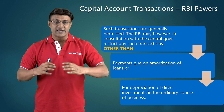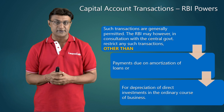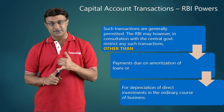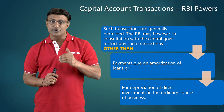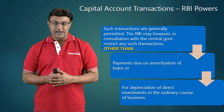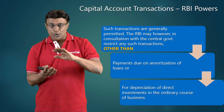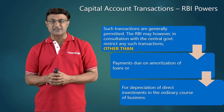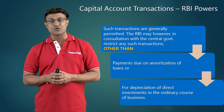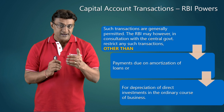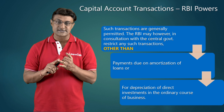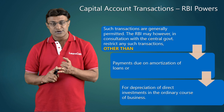There are two transactions on which restrictions cannot be imposed. The RBI and the central government have sat together and decided not to impose restrictions on these two payments: payments due on amortization of loans, and for depreciation of direct investments in the ordinary course of business — which means repayment of loans and providing for replacement of direct investments that are ordinary course of business or trading investments.